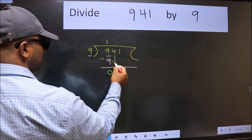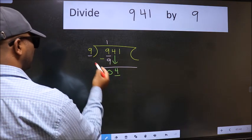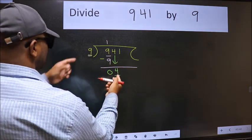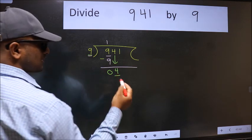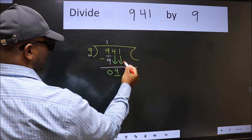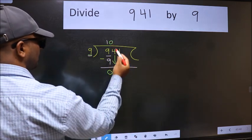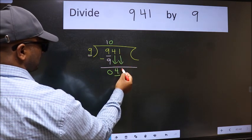After this, bring down the beside number 4. Now here we have 4 and here 9. 4 is smaller than 9, so we should bring down the second number. The rule to bring down the second number is we should put 0 here. Then only we can bring this number down.